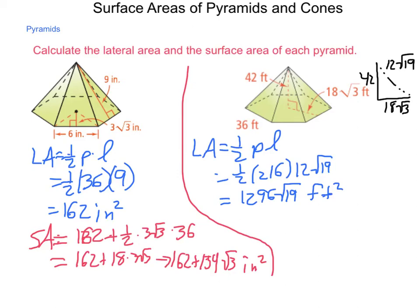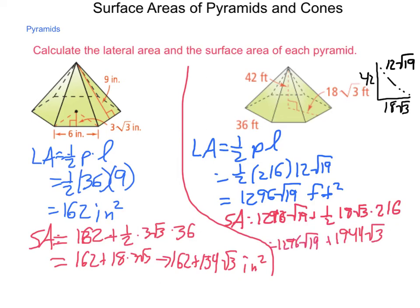Next, we calculate the surface area. So surface area is going to be this 1296 square root 19, plus that area of the base, which, again, is our one-half apothem perimeter. So that's one-half of 18 root 3 times 216. Multiplying these together, we get 1,944 square root 3, which we're adding to our 1,296 square root 19. Now we can go through and find decimal approximations, but I'm liking the exact values here. If you want, you can run that calculation through a calculator.